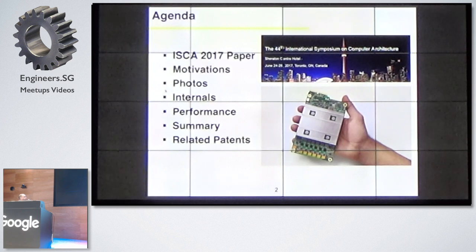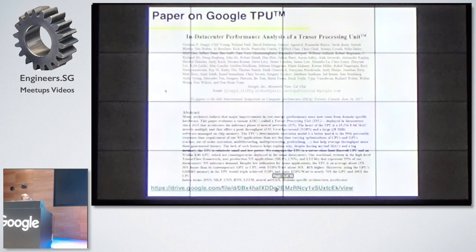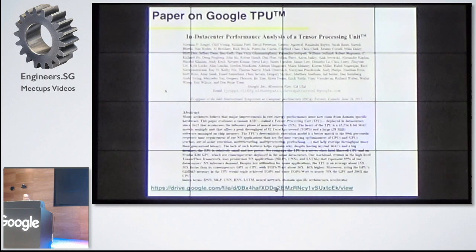I will go through motivation, pictures, internal performance, and then give you a summary and also some reference to the patents from the paper, because that's for technical people who want to know how Google is basically publishing and knowing more details about the technology behind. This paper has a lot of authors, as you can see from the list. The link is online — later on I will provide this PDF of the presentation so all of you can download and try to read the paper.